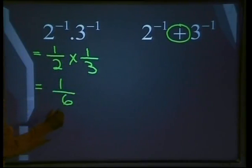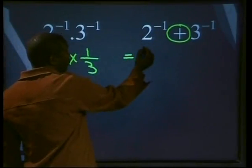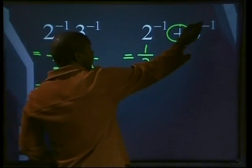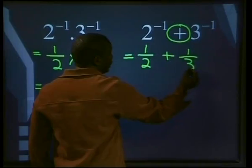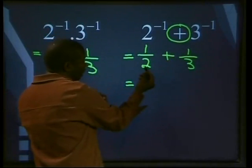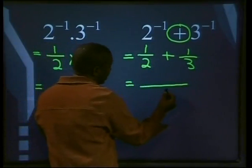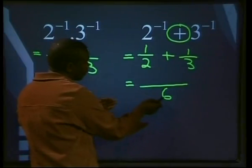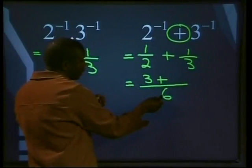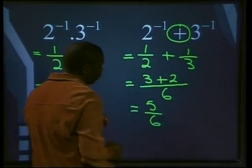For the addition: two to the power minus one is one over two, plus three to the power minus one is one over three. In this case we are adding, so we look for a lowest common denominator between two and three. The lowest common denominator is six. Two goes into six three times: three times one gives us three. Three goes into six twice: two times one gives us two. Three plus two gives us five over six.